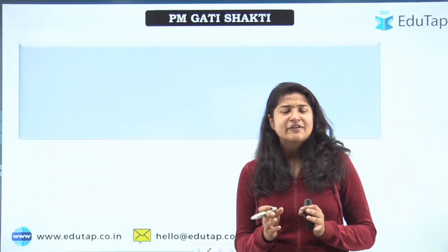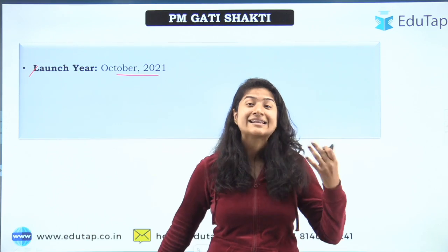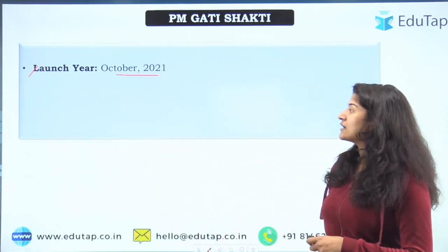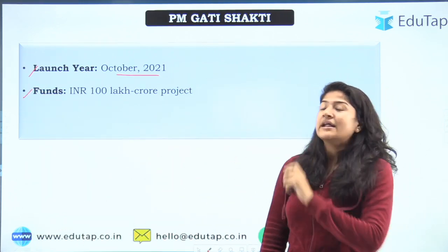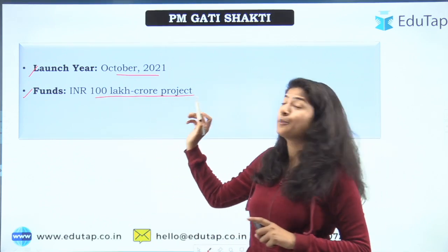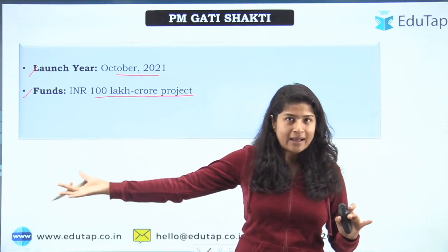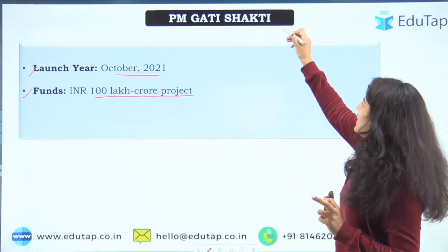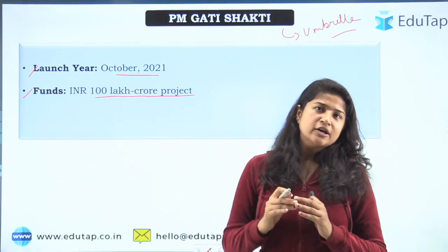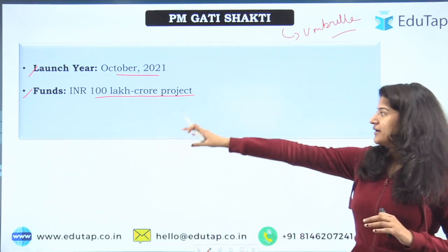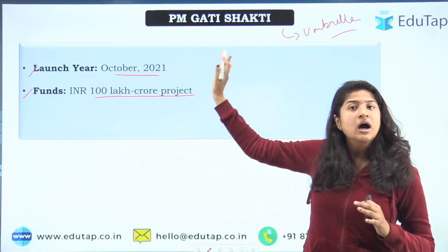We will start with the basic things. The launch year of this particular scheme is October 2021, so it is recently launched. Coming to the funds, it is a 100 lakh crore project. Now, where does this money come from? All the currently ongoing programs would be clubbed together under this scheme. This is an umbrella scheme — it covers all pre-existing schemes and they all work together for a higher purpose.